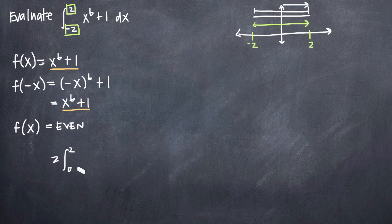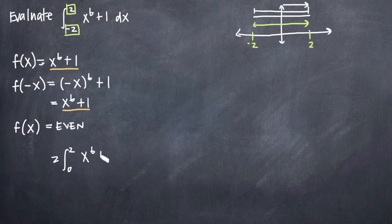So we'll simplify the integral and call it 0 to 2 multiplied by 2 of x to the sixth plus 1.